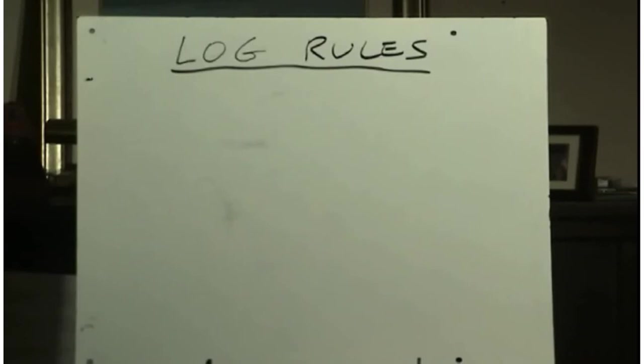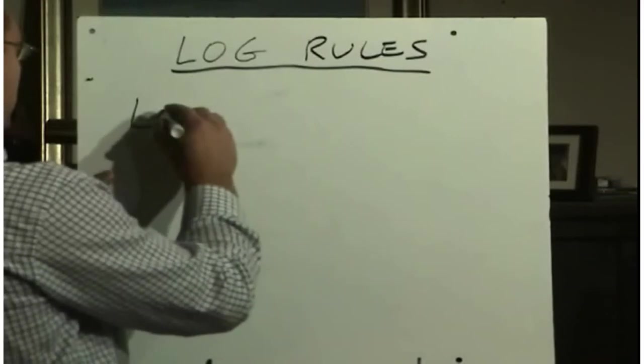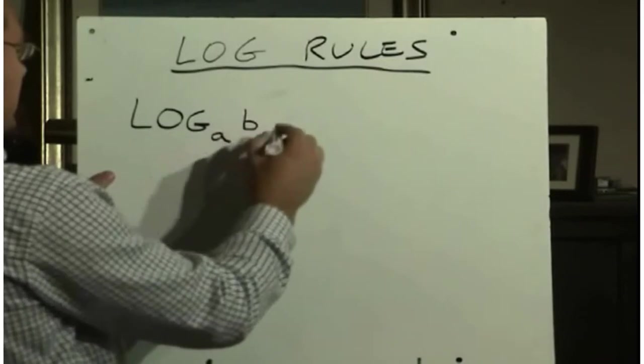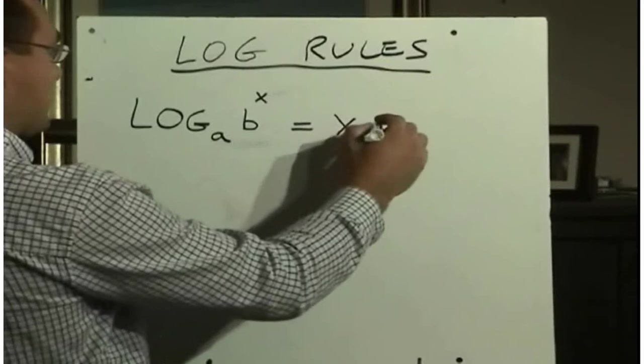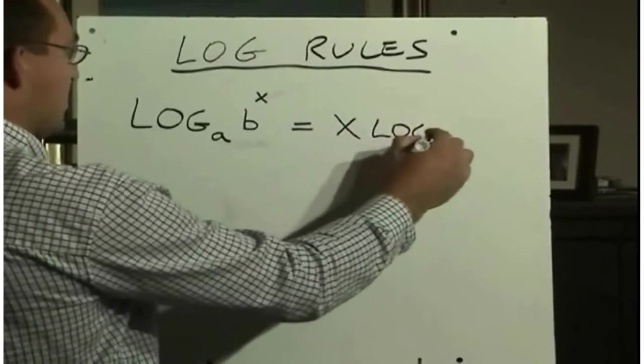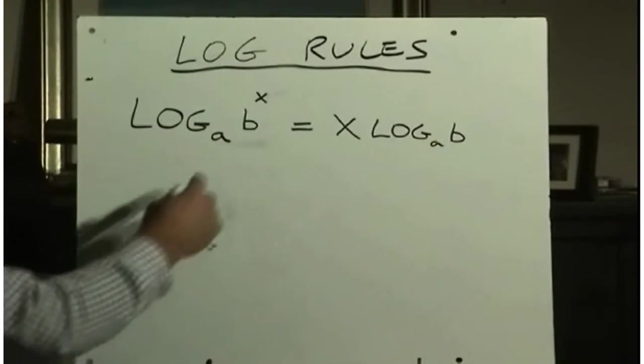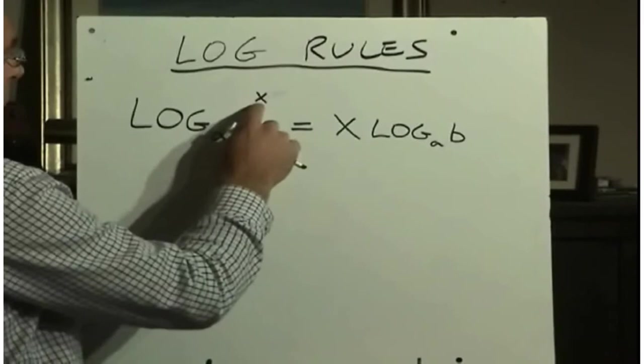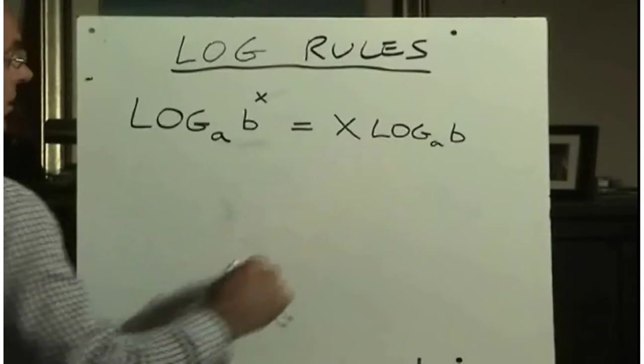but you certainly have to be able to apply them to your work. So the first rule is the exponent rule, and it says this: log base a of b to the power of x is equal to x times log base a of b. So here's the thing, if we have an exponent of what we're taking the log of, the exponent can be written down in front as a product of the exponent times the logarithm.